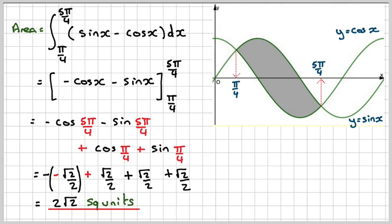So the exact area of the shaded region is 2√2 square units. This has been a video to show you how to find the area between two trig graphs. I hope you've understood, and thank you very much for watching.